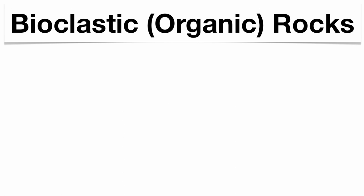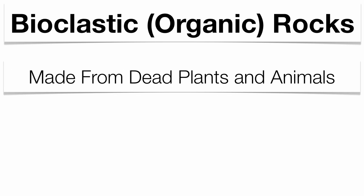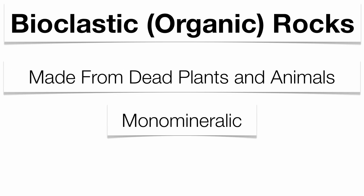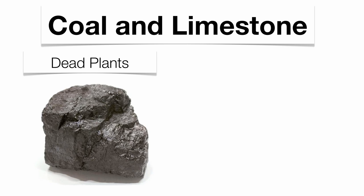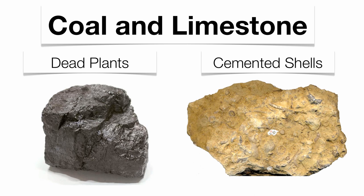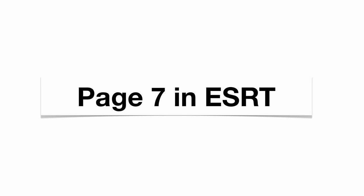The last type of sedimentary rock is what we call bioclastic or organic rocks, and these can be made from dead plants and animals. These also tend to be monomineralic. The two rocks you really need to know are coal, which is made of dead plants, and limestone, which is made up of cemented shells. Limestone is also in the chemical section — it can actually be made by two processes: either through chemical precipitates or through cemented shells. It's very important that you understand page 7 in the reference table, your sedimentary rock chart.